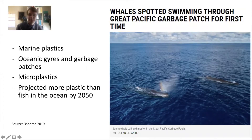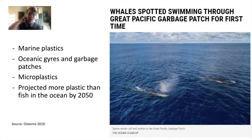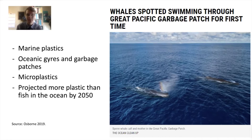I like including the article titled 'Whales Spotted Swimming Through Great Pacific Garbage Patch for First Time' because it helps visualize the patch. The garbage patch is much less of an island of plastics and much more of a soup of microplastics. Microplastics are formed from larger pieces called mesoplastics that break down through weathering — battered by waves and from UV degradation — so the larger pieces break down into ever smaller pieces but never truly go away. Because of the high volume of microplastics in the ocean, there are projections of more plastic than fish in the ocean by 2050.